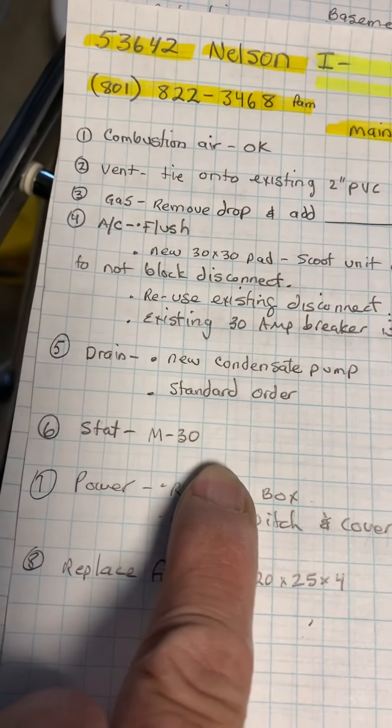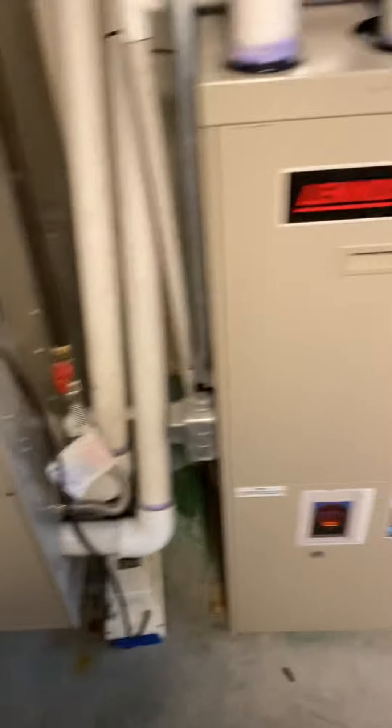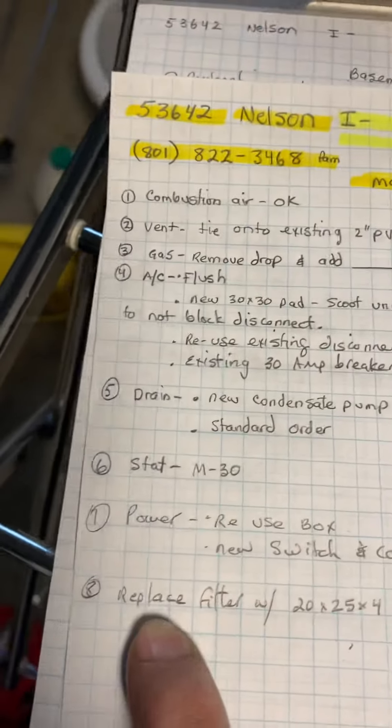Stat, we're going to put an M30 thermostat on. Power, reuse the box, add new switching cover. Replace the filter in the existing box with 20 by 25 by 4.